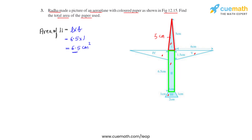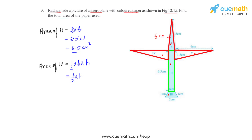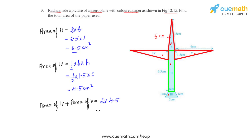Now we find the areas of region 4 and region 5, as highlighted in the figure. These two triangles are right-angled triangles of equal area. Area of region 4 = (1/2) × base × height = (1/2) × 1.5 × 6 = 4.5 centimeter square. Since the area of region 4 equals the area of region 5, the combined area of regions 4 and 5 = 2 × 4.5 = 9 centimeter square.